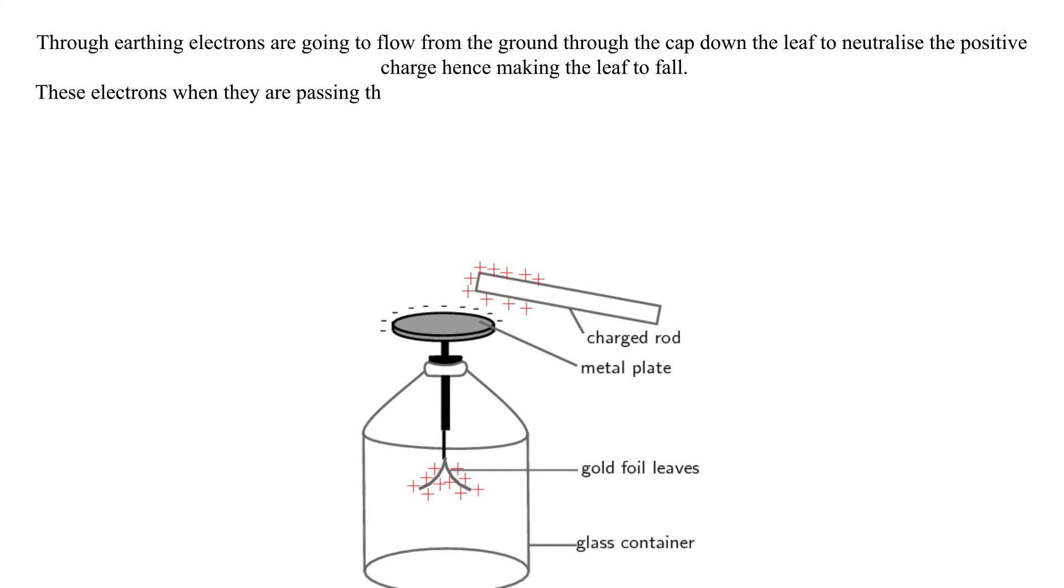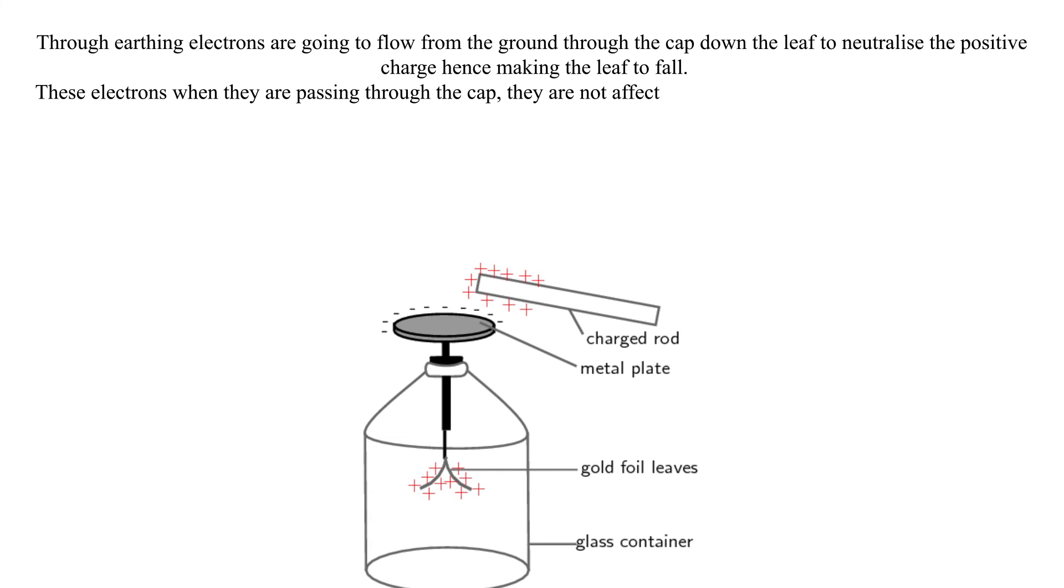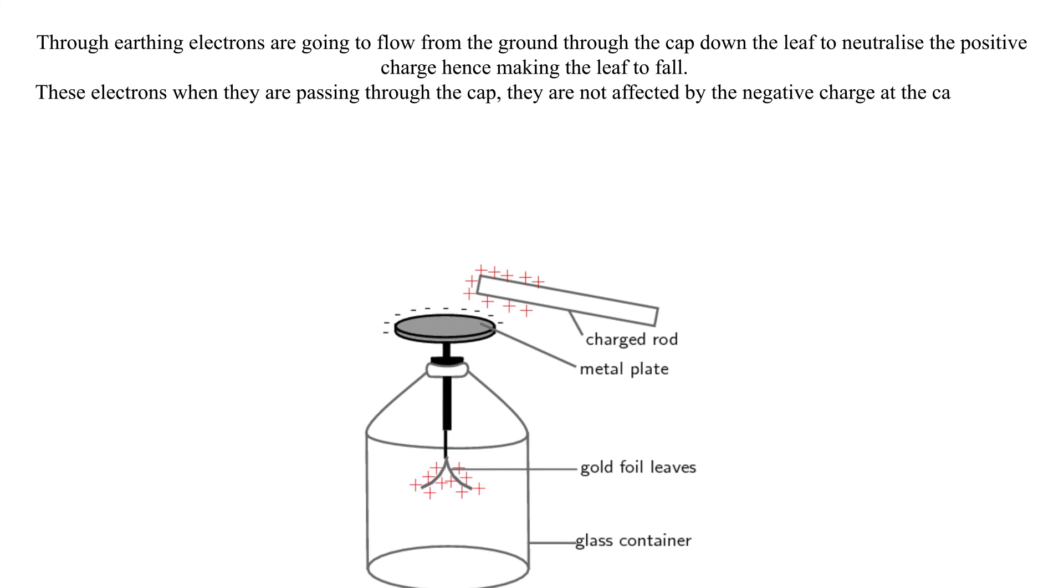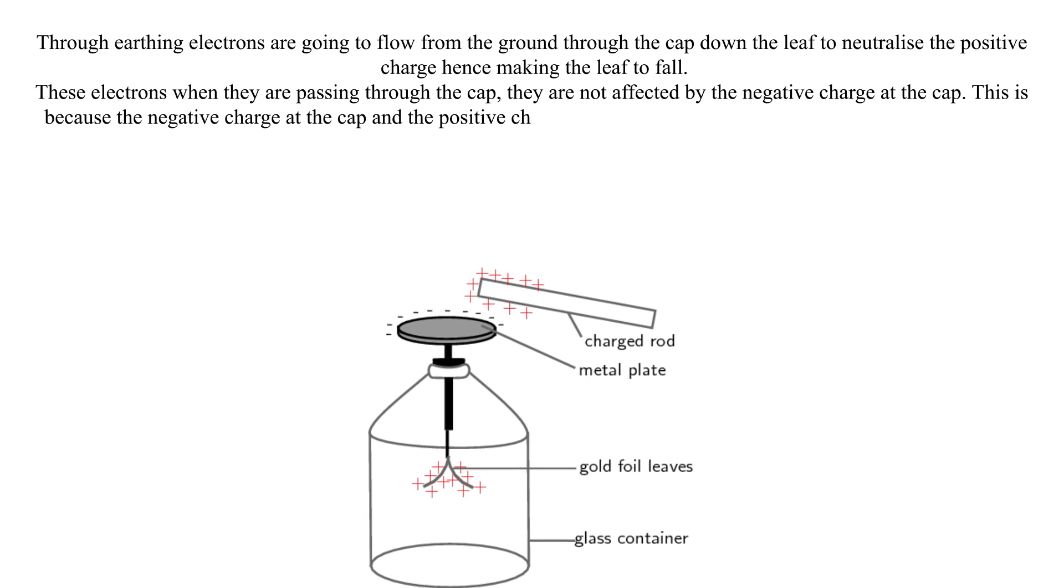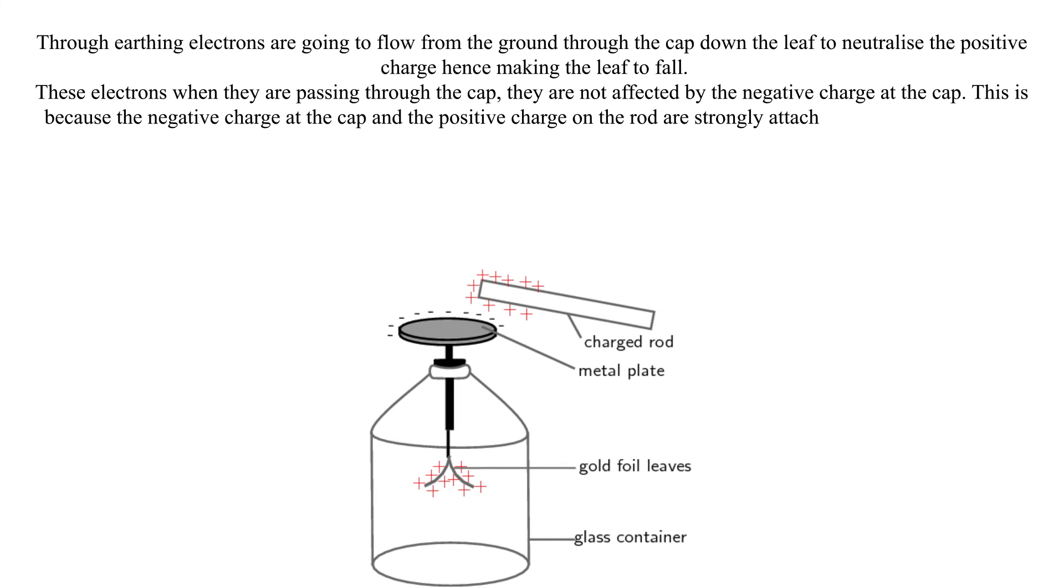These electrons, when they are passing through the cap, are not affected by the negative charge at the cap. This is because the negative charge at the cap and the positive charge on the rod are strongly attached because of attraction.